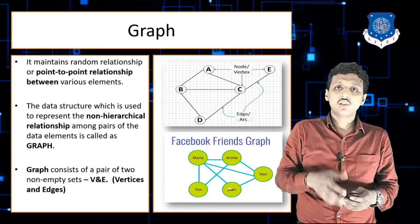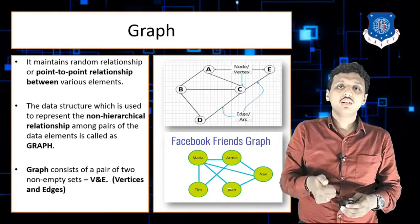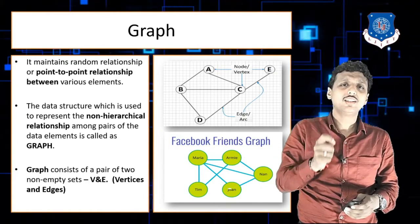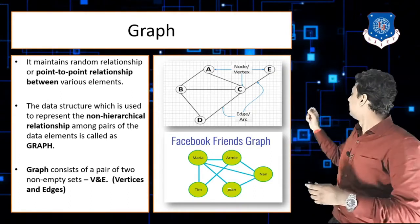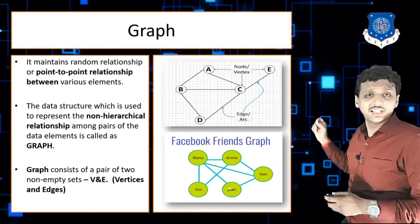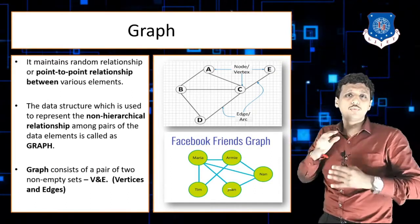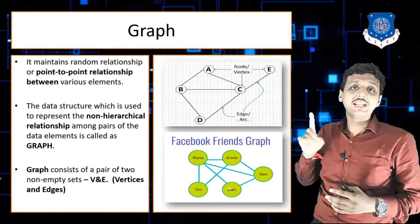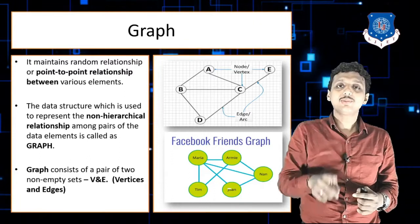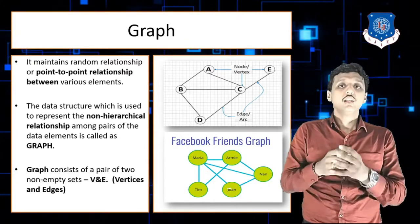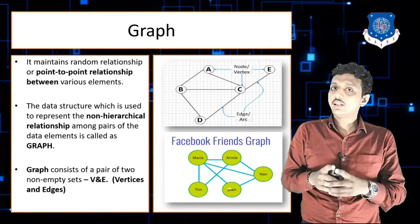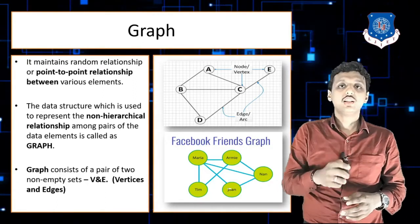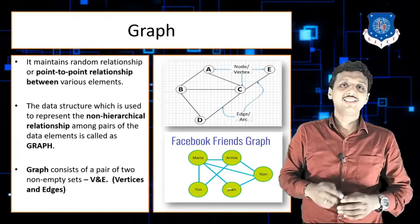Both tree and graph are non-linear data structures. In a linear data structure, elements are stored in a sequential fashion, but in tree and graph it is not like that. In tree, elements are stored in a hierarchical fashion, and in graph they are stored in a non-hierarchical fashion.